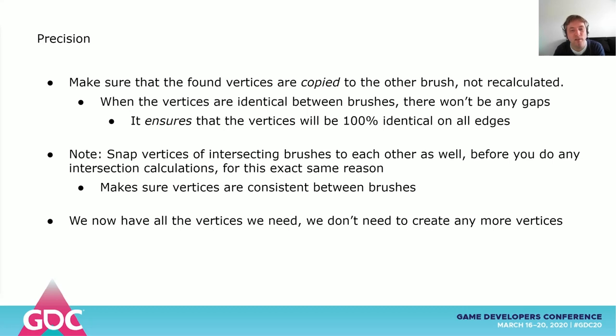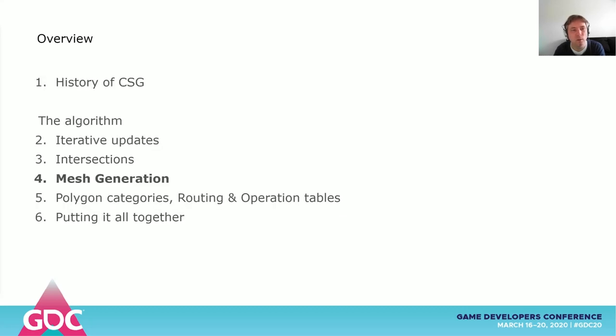After this point, we have all the vertices we need — we don't need to add new ones anymore. Now in our next section, in order to explain categorization, I need to explain how we generate the final meshes, so we'll start there.